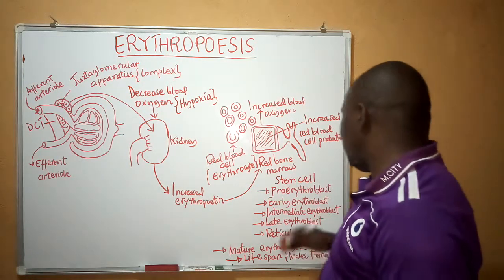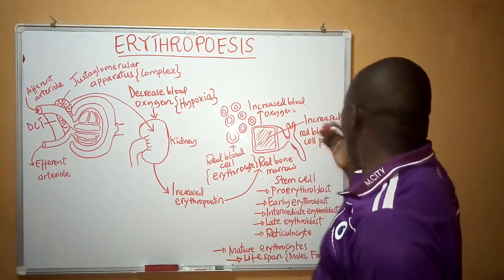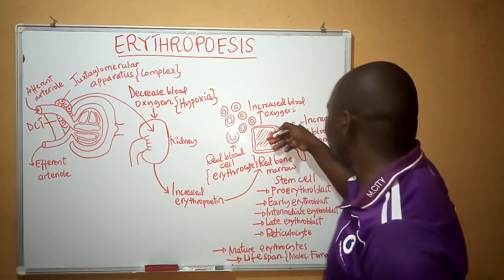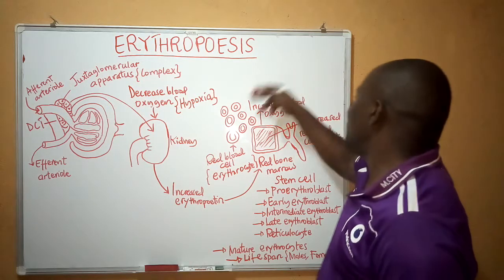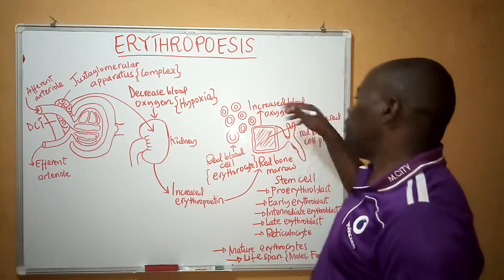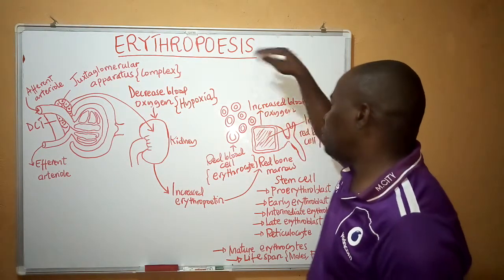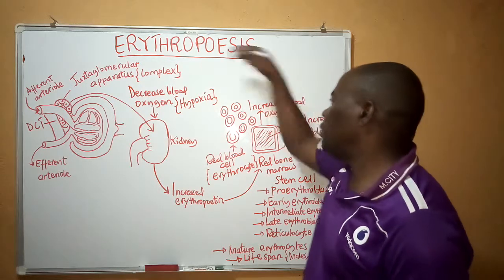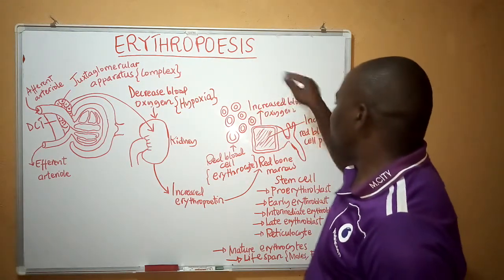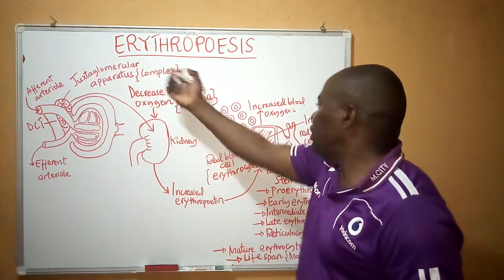The number of red blood cells from the red bone marrow at the central part of the bone will be increased. After increasing, the red blood cells will be transported towards the general circulation, where a high concentration of blood will be supplied towards the lungs to pick up oxygen.